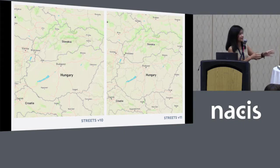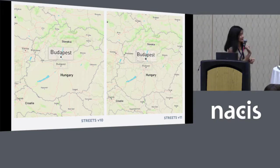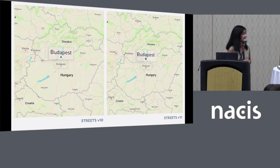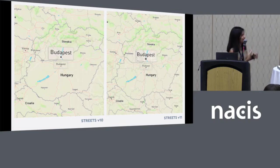Just focusing particularly on these city label symbols — there's a slight difference in icon styling. On the left we have just a normal circle, and on the right we have this fancy bordered circle.